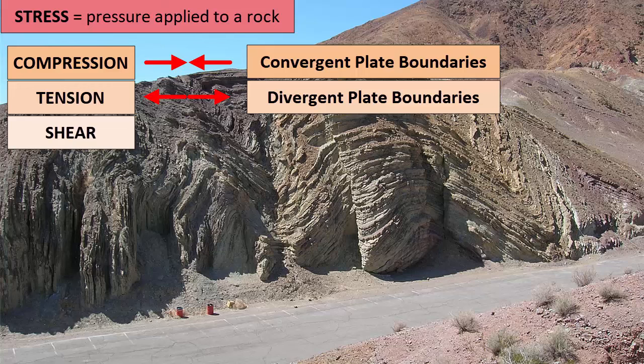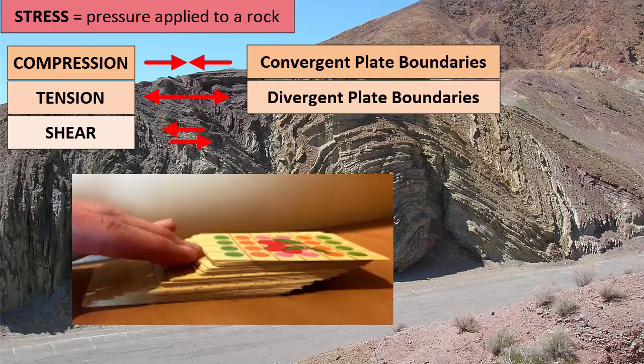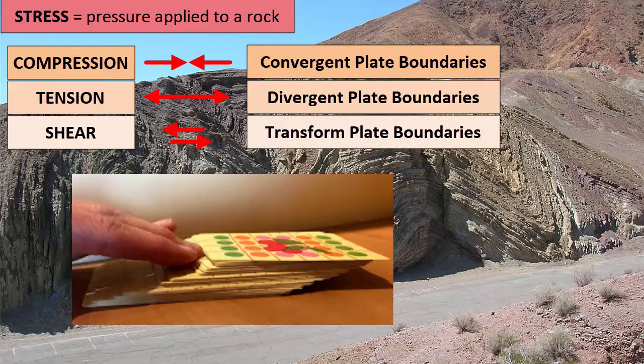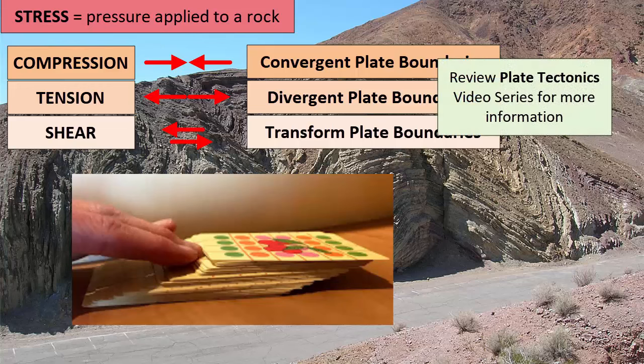When rocks are sheared, they experience what happens when you push on the top of a deck of cards while friction holds the bottom. One side moves in one direction, while the other side remains fixed or moves in the opposite direction. Shear happens at transform plate boundaries, where plates slide past one another. Review the Plate Tectonics video tutorials for more information on plate movements and boundaries.